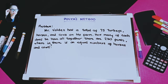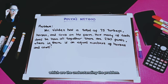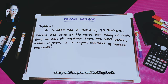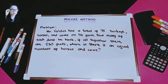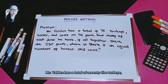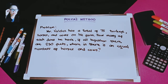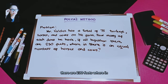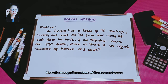Good day everyone. For today's video, we are going to solve a problem using Polya's four-step method: understanding the problem, devise a plan, carry out the plan, and looking back. Our problem: Mr. Valdez has a total of 75 turkeys, horses, and cows on his farm. How many of each does he have if altogether there are 230 feet, with an equal number of horses and cows?